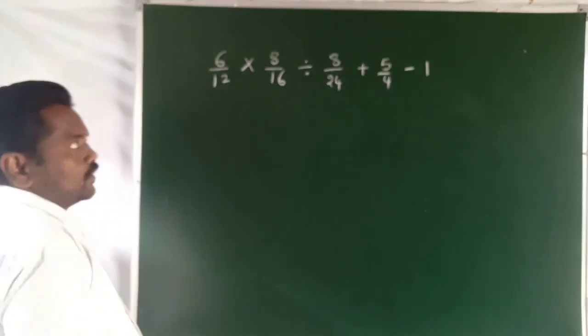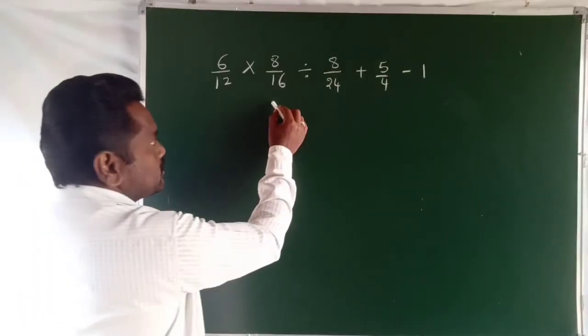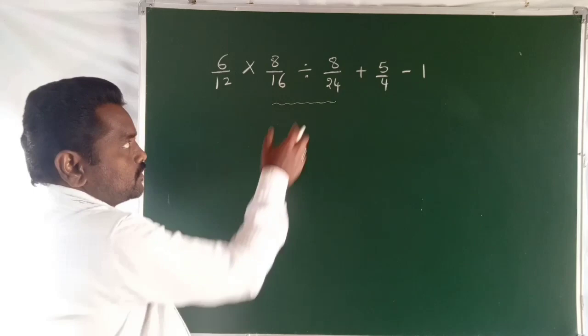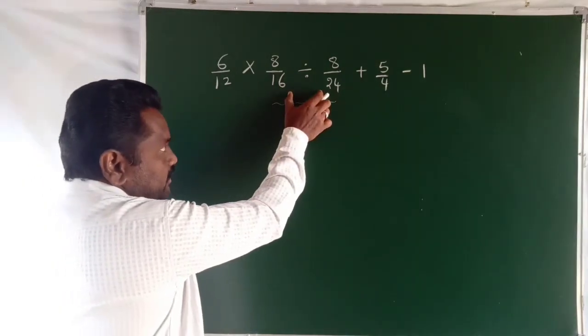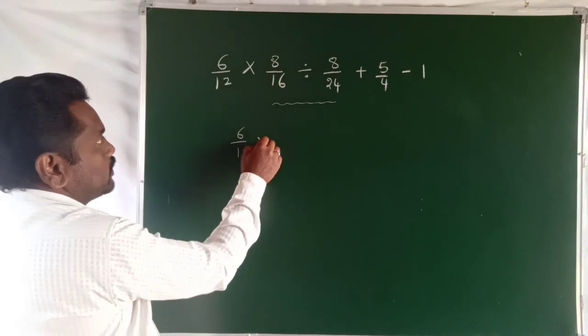After that, we will start with division. Which one is the division? These two terms are division. The problem starts with step one: 6 by 12.